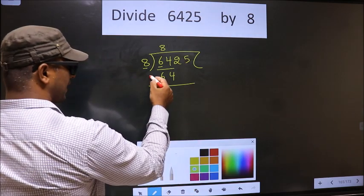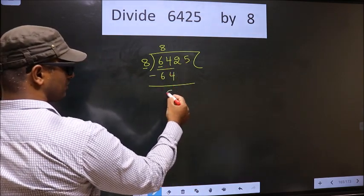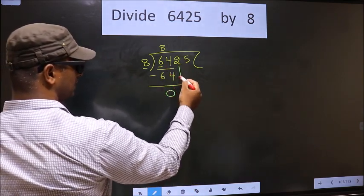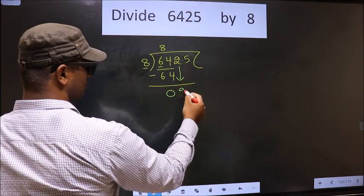Now you subtract. 64 minus 64 is 0. Now you bring down the beside number, so 2 down.